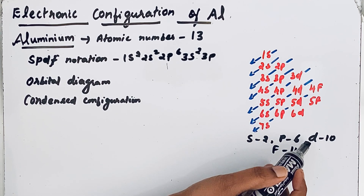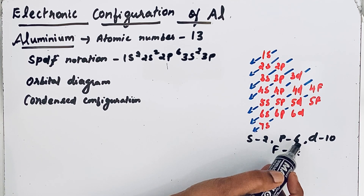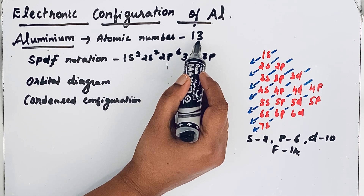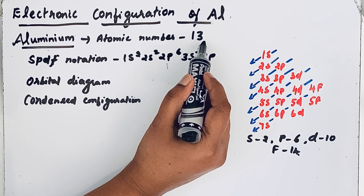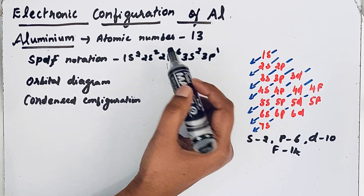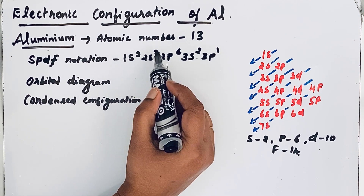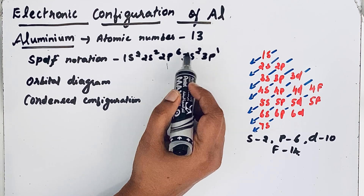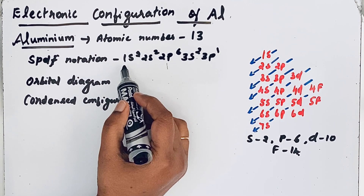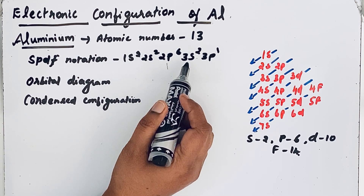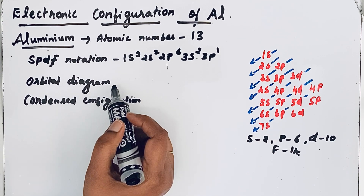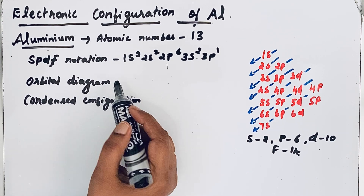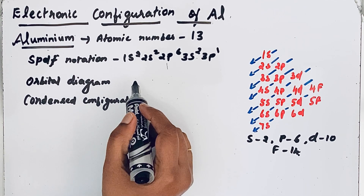Even though 3p orbitals can carry 6 electrons, the number of electrons available is only 13, so we write 3p¹. Count once again: 13 electrons are present. This is the spdf notation. Now let us see the orbital diagram, where each orbital is represented in the form of a box.